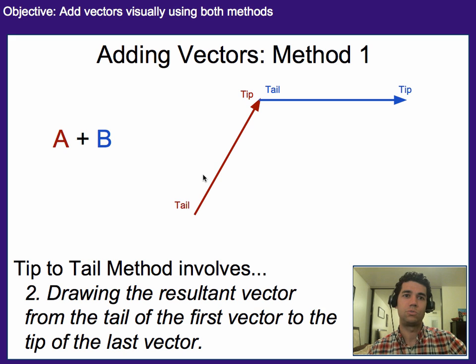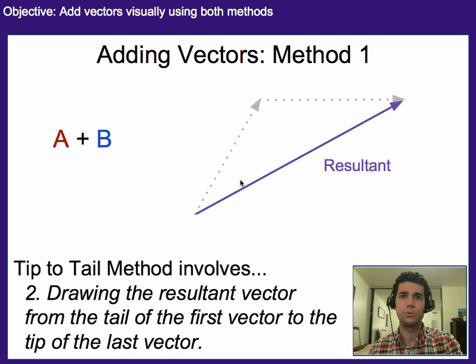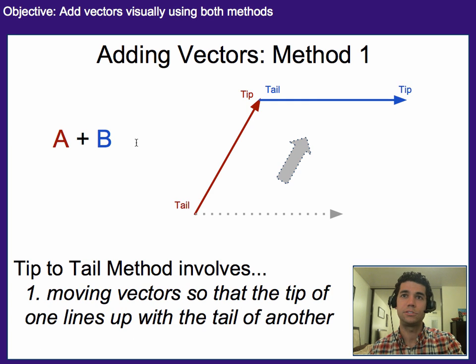The second step is we draw the resultant vector from the tail of our first one to the tip of our second one. In other words, we're looking at the displacement between these two vectors. Even if they're representing force, visually this would be displacement, or as we call it in vector terms, the resultant. So the resultant ends up being from the tail of here to the tip of there, and this would be the resultant vector of our previous two vectors.